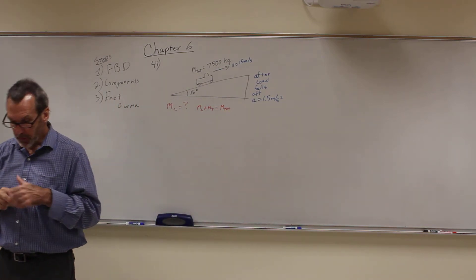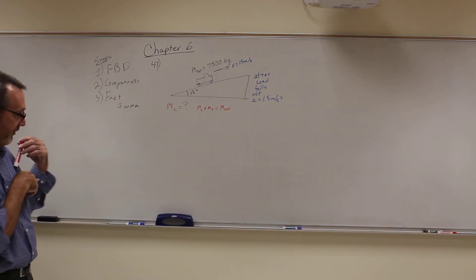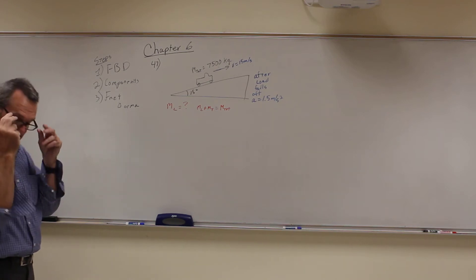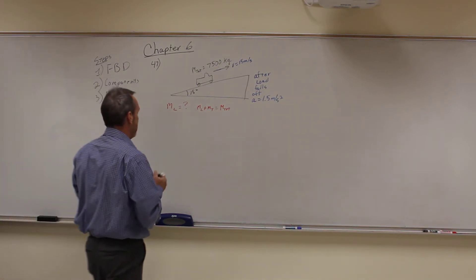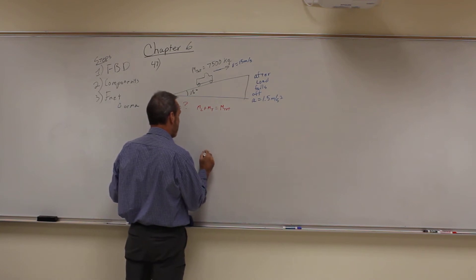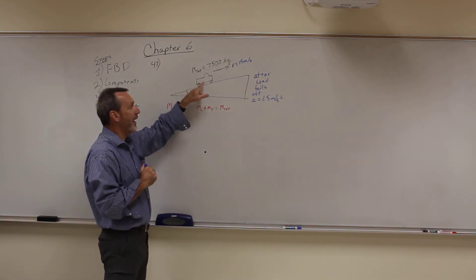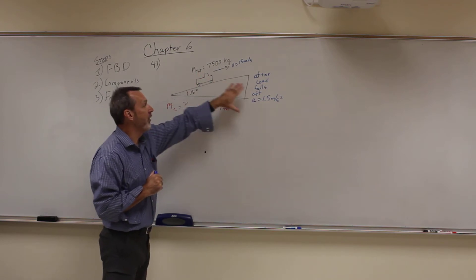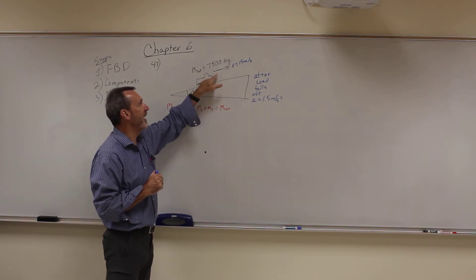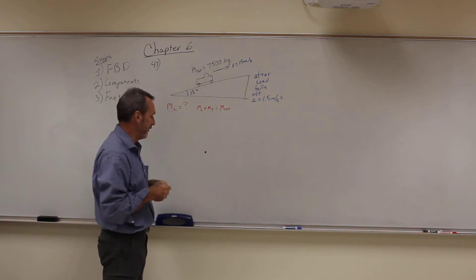All right. So, how do we start? Well, we start like we start every single force problem. We do a free body diagram for the truck. So here's the truck. We're going to do the free body diagram for the truck before the load falls off, so we want to get its constant state when it's going at 15 meters per second.